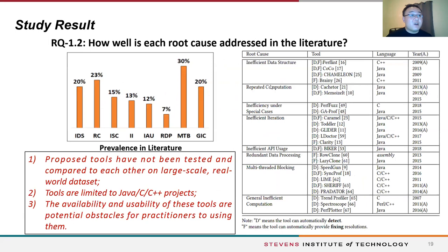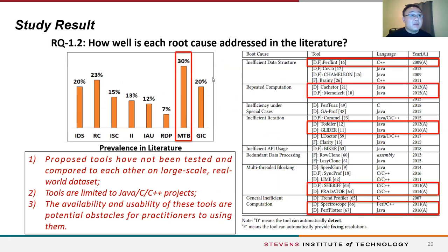We performed an extensive literature review of 60 papers that investigated the root causes of performance issues. The most prevalent studied root cause is multi-thread blocking, and as shown in the table, each type of issue has existing tools. Developers may benefit from these automatic detecting and fixing tools. However, these proposed tools have several potential limitations: first, they have not been tested and compared on a large-scale real-life dataset; second, tools are limited to certain programming languages such as Java and C++; third, the availability and usability of these tools are not guaranteed, as only a few have links to download and install.